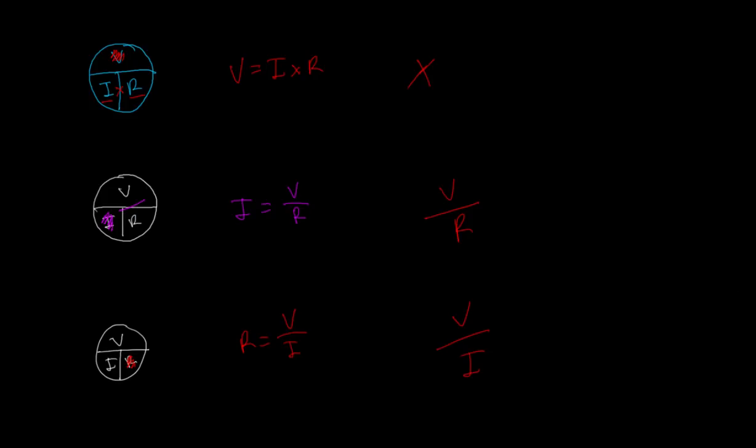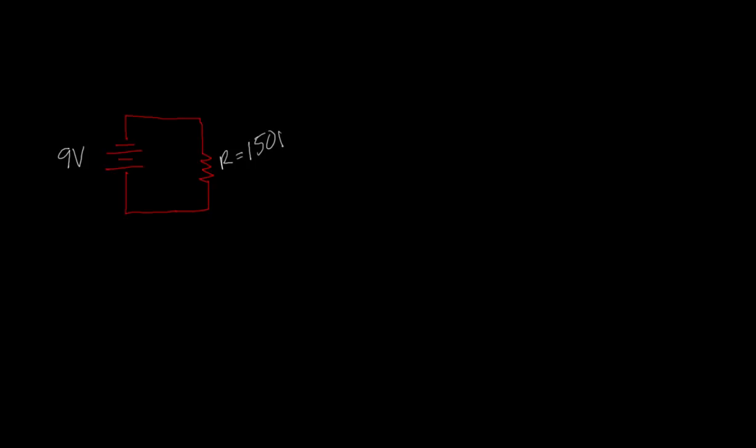Basically how it works when we're looking at a single component schematic — a schematic is an electrical drawing that shows you what is in a circuit. So this is the symbol for a battery, those are the wires, and you're going to have a resistor which is a squiggly line, then another wire that comes back. Let's say this is a 9-volt battery and the resistance of this resistor is 150 ohms.